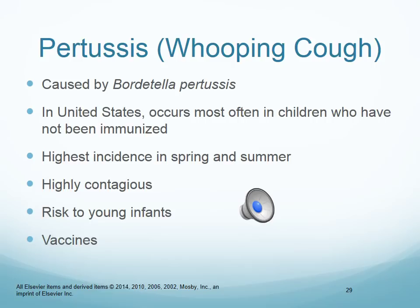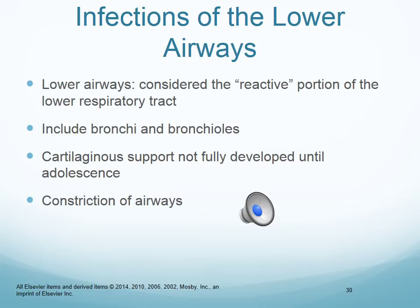In the upper airway infections we've been discussing, we were talking a lot about mucous membranes. Now we're moving to the lower airways — this involves a lot more cartilage, differently shaped in children than in adults, not fully developed, and at high risk for spasming and closing off. It's more narrow, so edema and inflammation can close off the airway. Let's talk about infections of the lower airways.